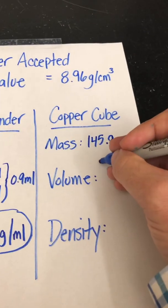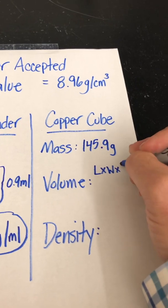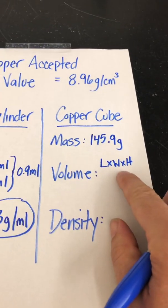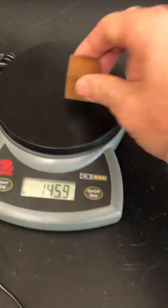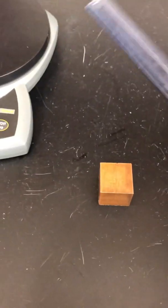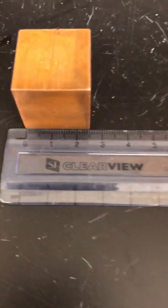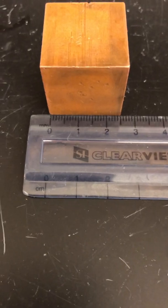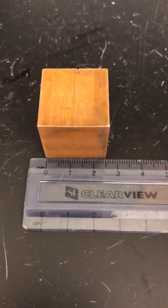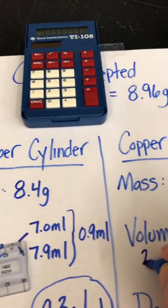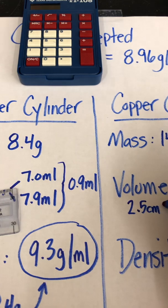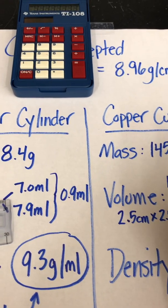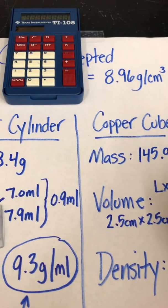Now the volume. We have to do length times width times height. This is a regular sided object. So take your ruler using centimeters. That's 2.5 centimeters. Now because this is a cube, every side is going to be the same. So 2.5 times 2.5 times 2.5.